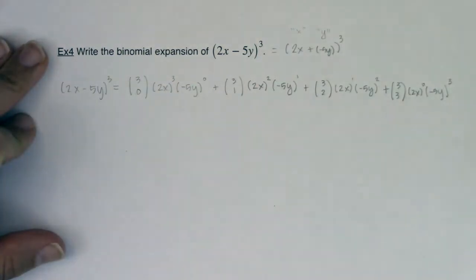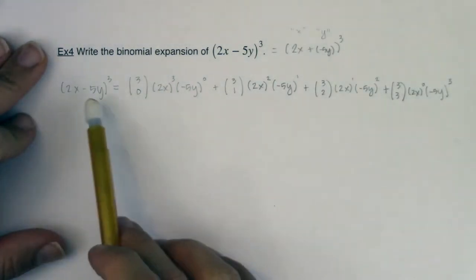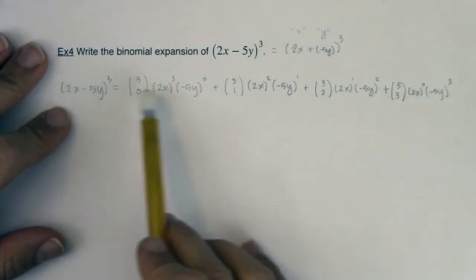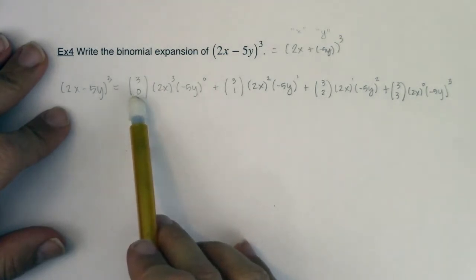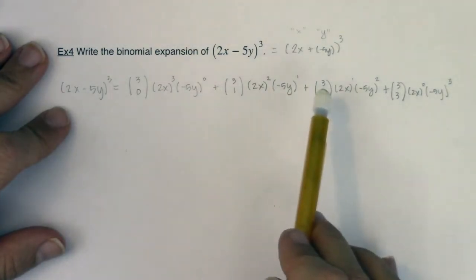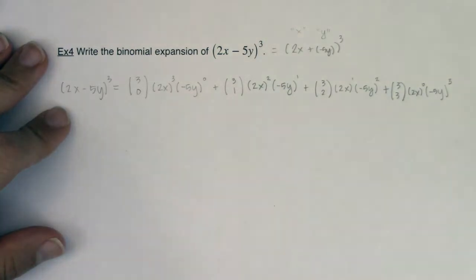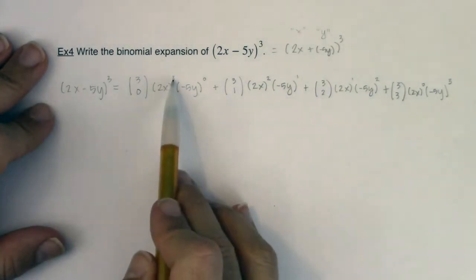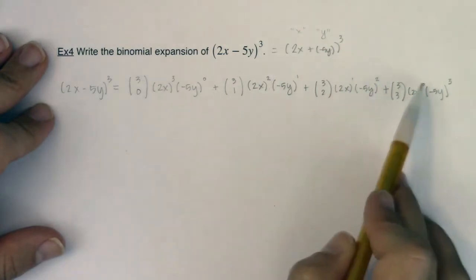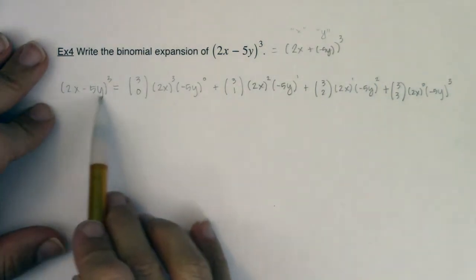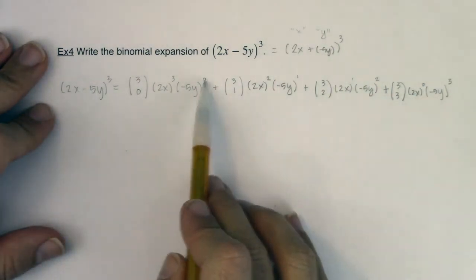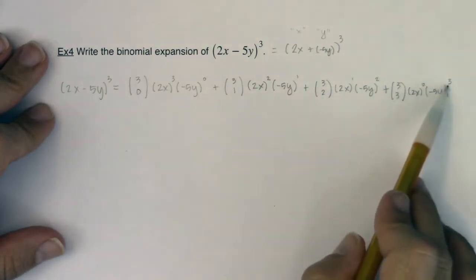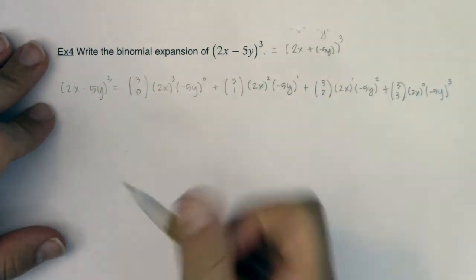Let's just take a step back and see where we've gone. When I'm expanding this binomial, I use the binomial coefficients 3 choose 0, 3 choose 1, 3 choose 2, 3 choose 3. The powers on 2x descend: 3, 2, 1, 0. The powers on negative 5y ascend: 0, 1, 2, 3. And now it's a matter of simplifying all of this.